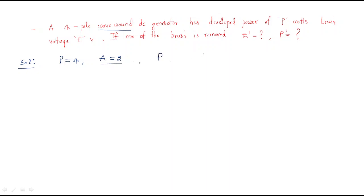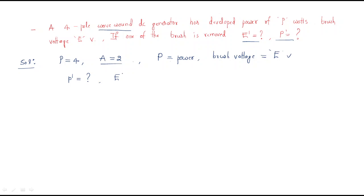The brush voltage is equal to E volts. If one brush is removed, what is the power and the brush voltage? The power developed after removing a brush can be named P prime, and the voltage across the brush is E prime.